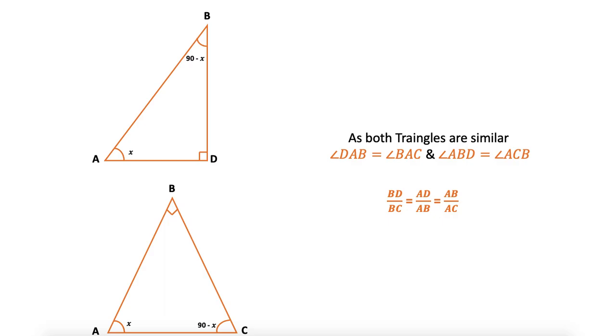Considering angle 90 - X, in front of 90 - X in upper triangle we have AD, in lower triangle I have AB. And in front of 90 in upper triangle I have AB, and in lower triangle I have AC. So the ratio is BD/BC = AD/AB = AB/AC. First one is based on X angle, second one is based on 90 - X, and third one is based on 90 degrees.